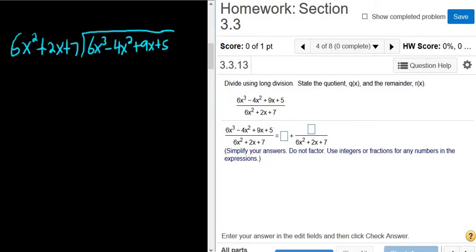We start by asking: what do we multiply by 6x² to get 6x³? Simply x. You line it up with the x term, putting it right above the 9x.